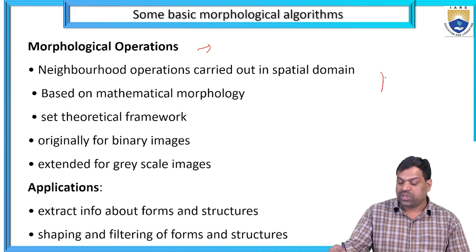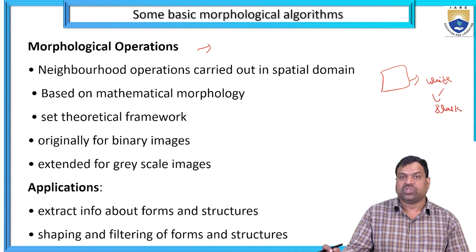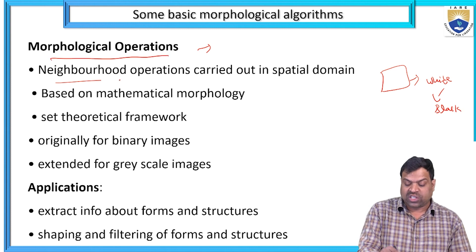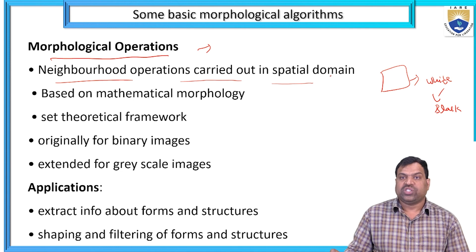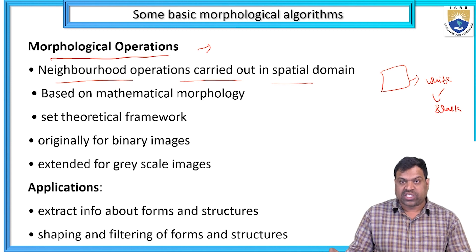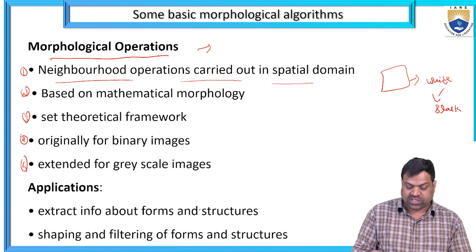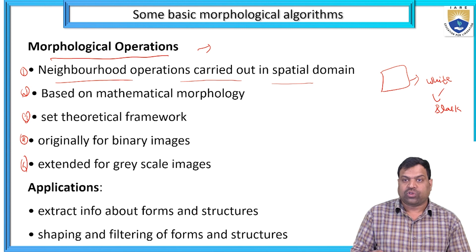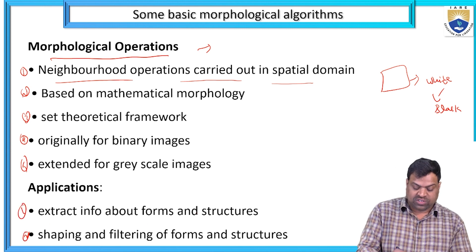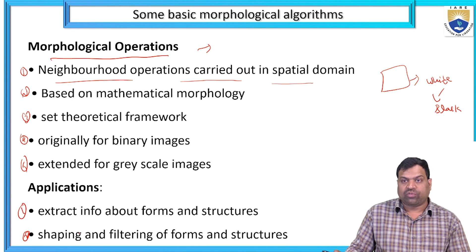The neighborhood operations are carried out in a spatial domain based on mathematical morphology and set theoretical framework, originally for binary images and extended for grayscale images. There are around five types. The applications are: first, extract information about forms and structures; second, shaping and filtering of forms and structures.